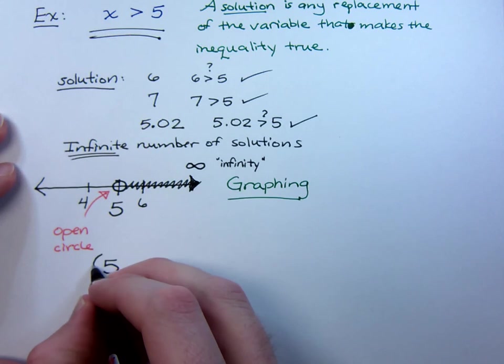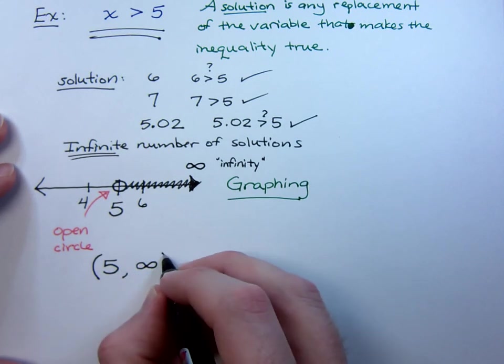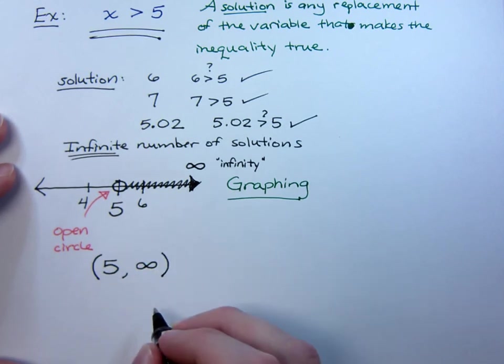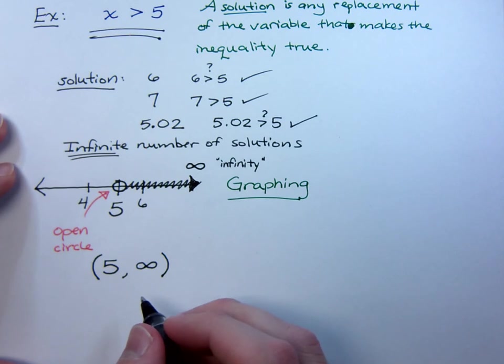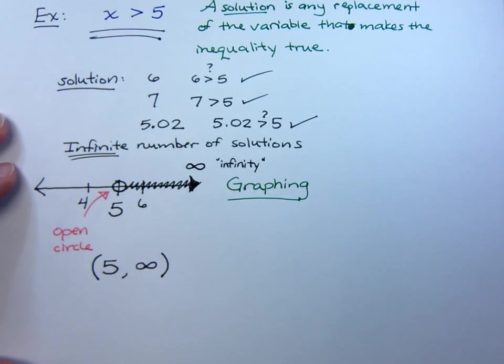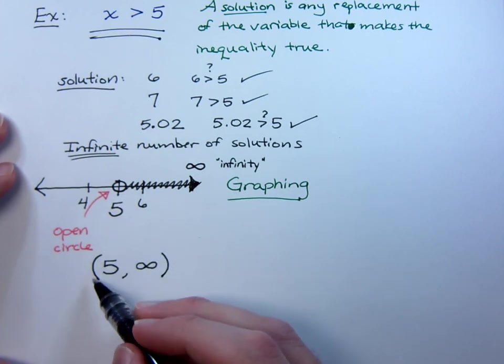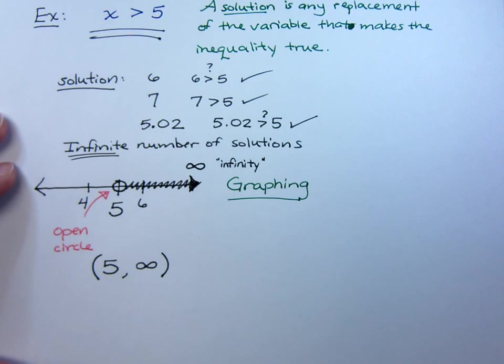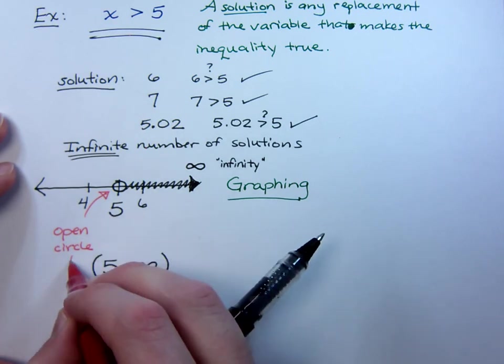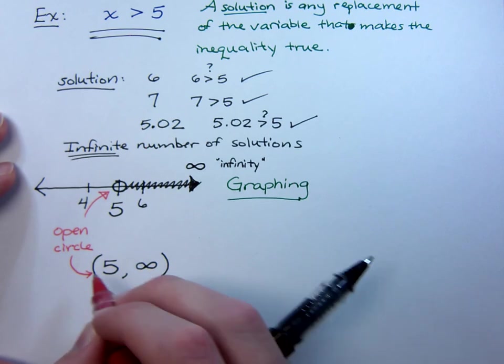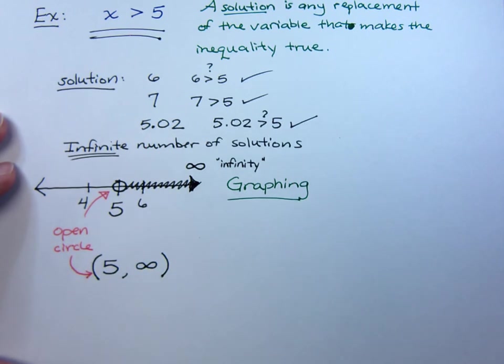Now, the other part of the notation that we would use would be parentheses for this. Every once in a while, you will use a bracket, and that's when you are including the endpoint. Since we're not including the 5, we're just getting as close to it as we want to, we're going to use parentheses.